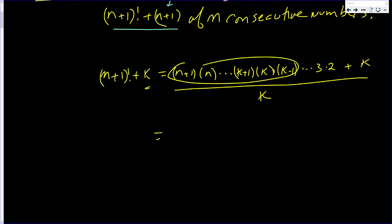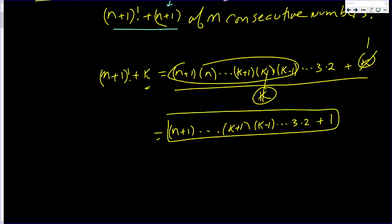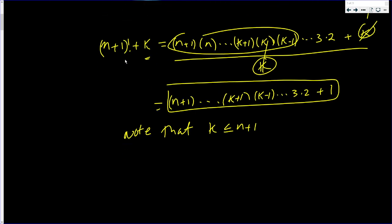Goes into this number (n+1), all the way down to k+1. The k's cancel. Then you get (k-1) down to 3 times 2. And k goes into this number one time. So this is a real number. k went into that. And again, note that k was less than or equal to n+1.